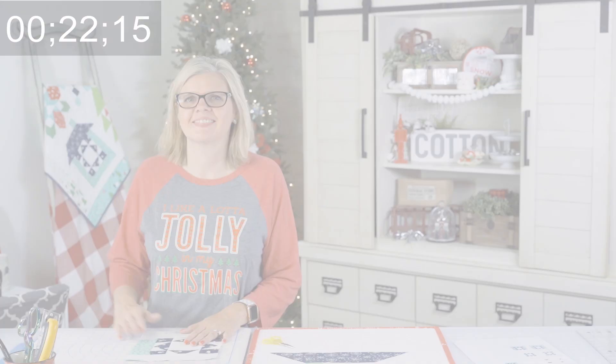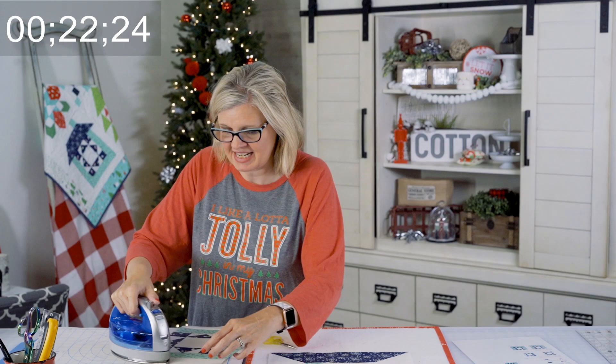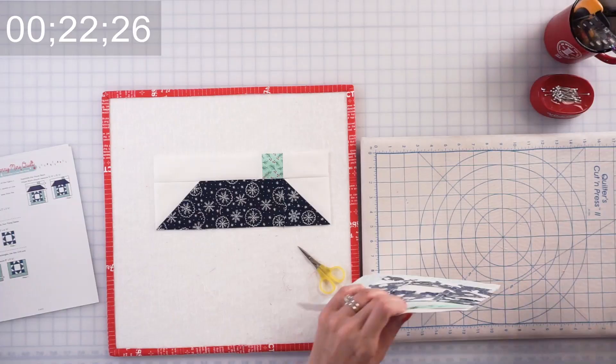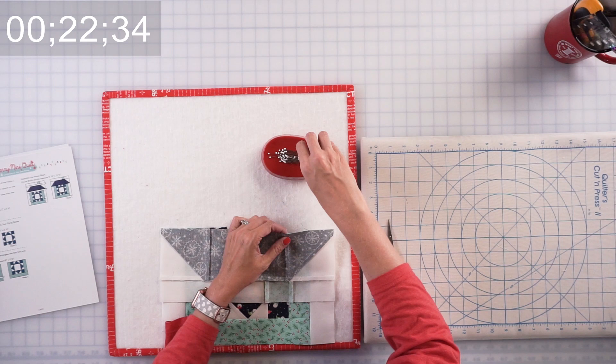Very last step, guys. And I love the colors, how they're coming together. I really like the combination of this navy and aqua. So all you have to do now is put these together and your seams will nest. You're going to want to pin right in those seams and make your last seam on this beautiful block.